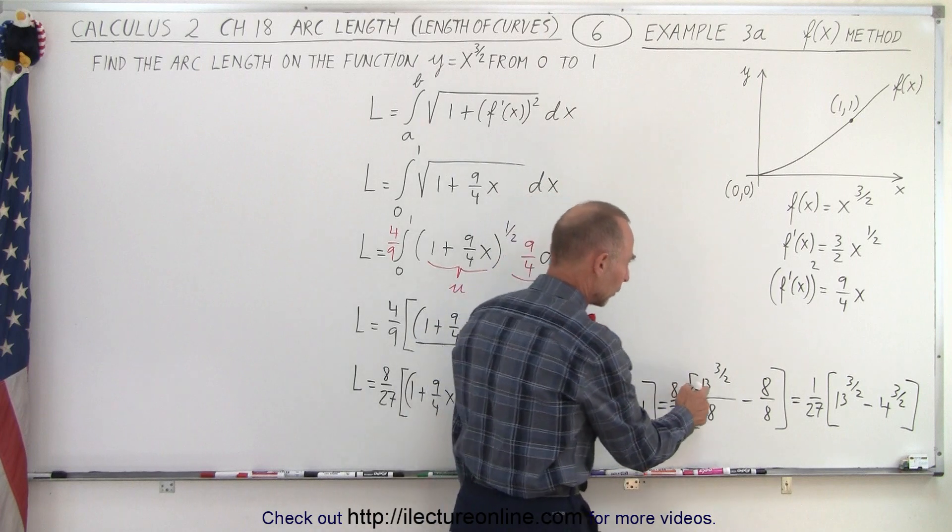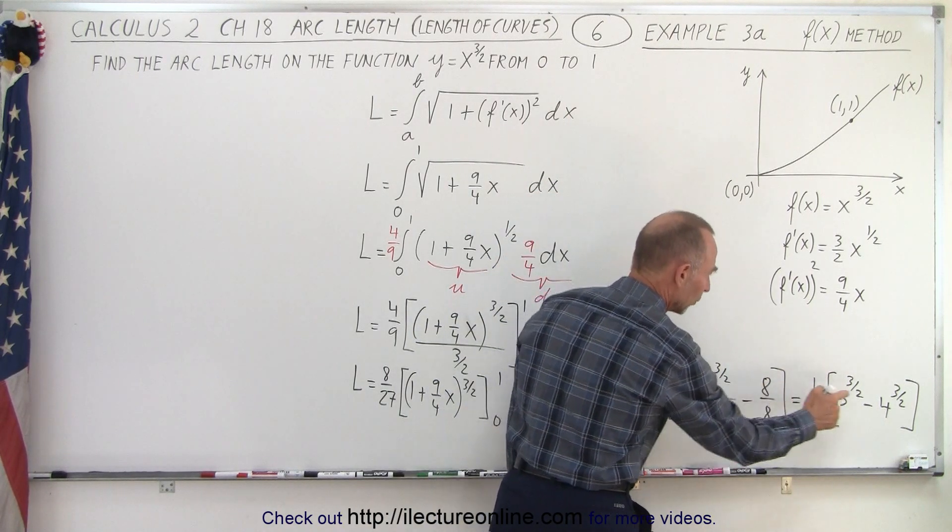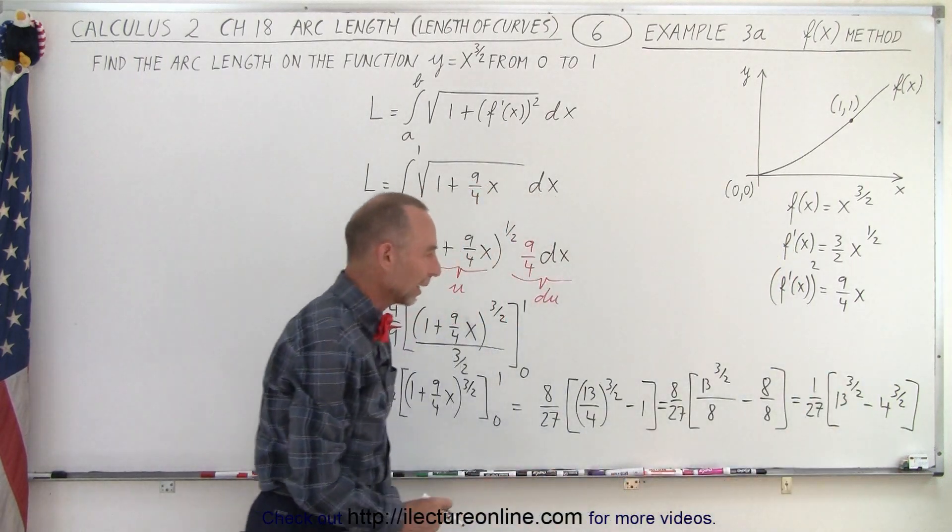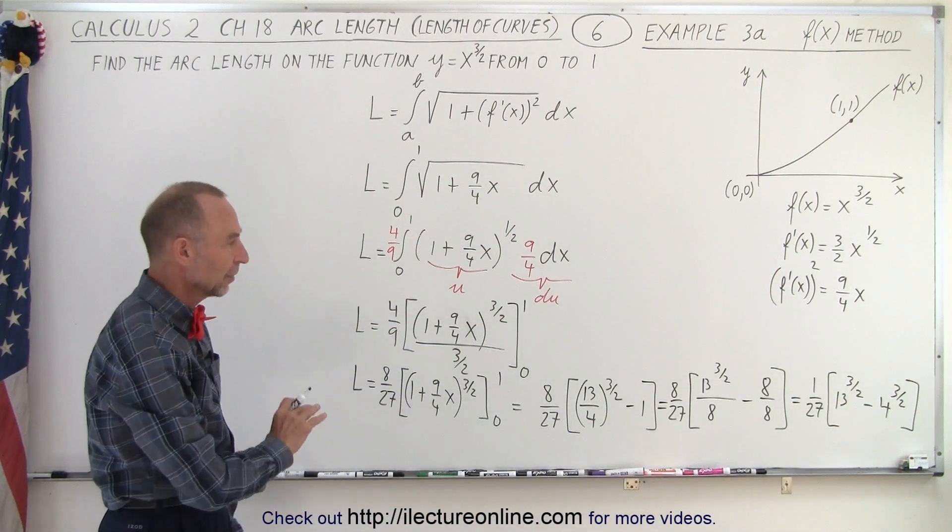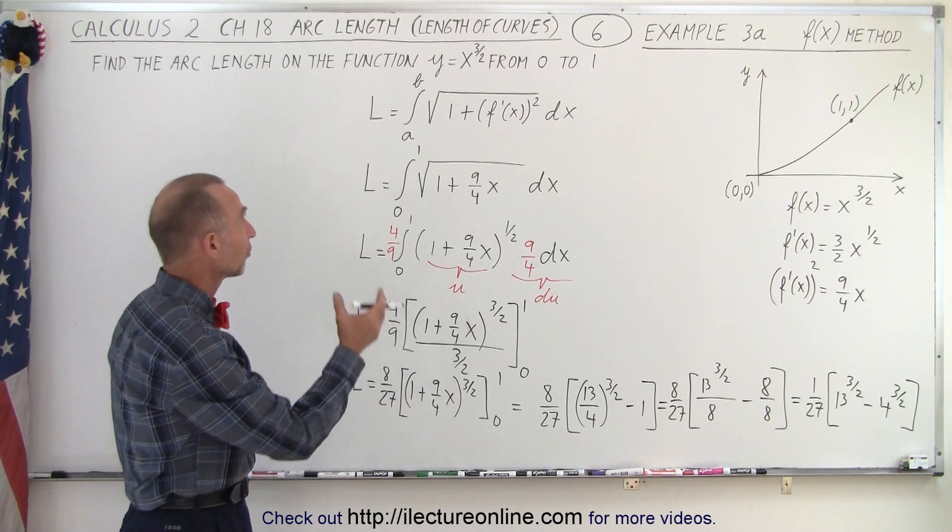So it's 1 over 27, 13 to the three halves and then eight. Four to three halves I take the square root I get two cubed get eight so that seems like it is correct. So we're going to leave it like that because that way we could show you that we end up with the same answer when we solve it using a function of y instead of a function of x.